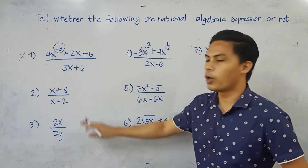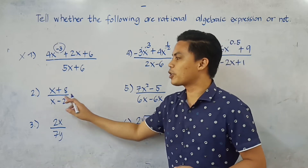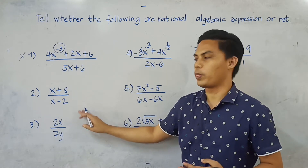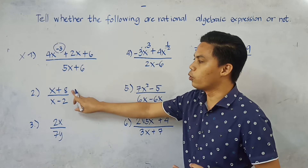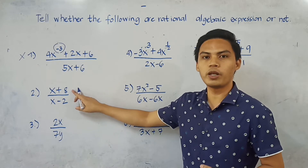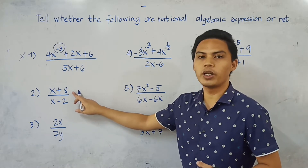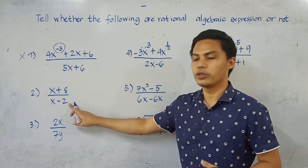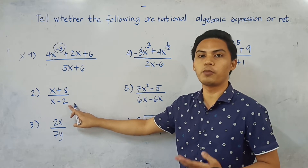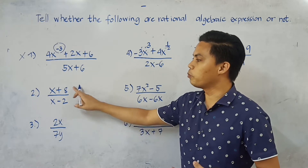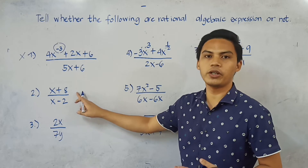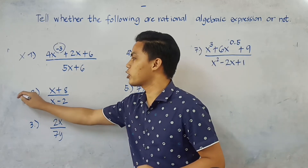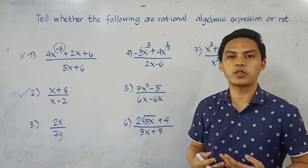Number 2: We have x plus 8 all over x minus 2. Is the numerator a polynomial? Yes, the numerator is a polynomial. How about the denominator? The denominator is also a polynomial. Since both the numerator and denominator are polynomials, this IS a rational algebraic expression.